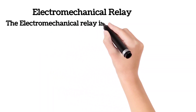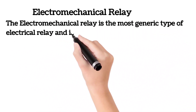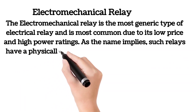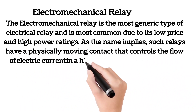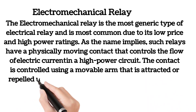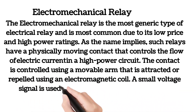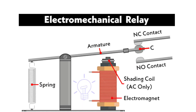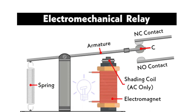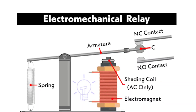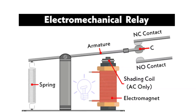The electromechanical relay (EMR) is the most generic type of electrical relay and is most common due to its low price and high power ratings. Such relays have a physically moving contact that controls the flow of electric current in a high-power circuit. The contact is controlled using a movable arm that is attracted or repelled using an electromagnetic coil. A small voltage signal is used to energize the coil to produce the necessary magnetic field. EMR consists of the following parts: electromagnetic coil, armature, and contacts. The contact is placed on an armature that switches places due to the magnetic force applied by energizing and de-energizing the coil. The electromagnetic coil is placed below the armature, which pulls the armature down to close the contacts.